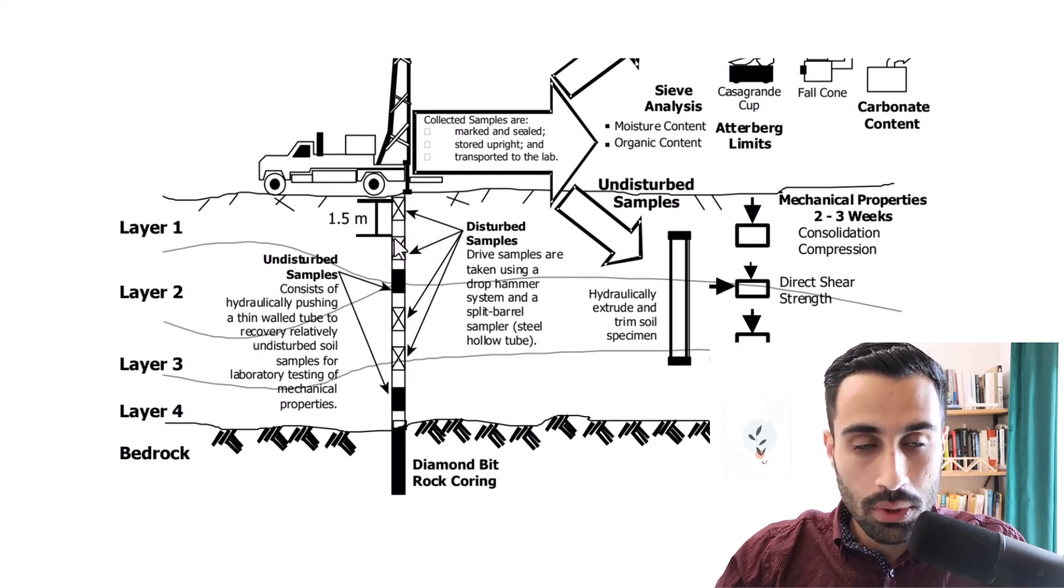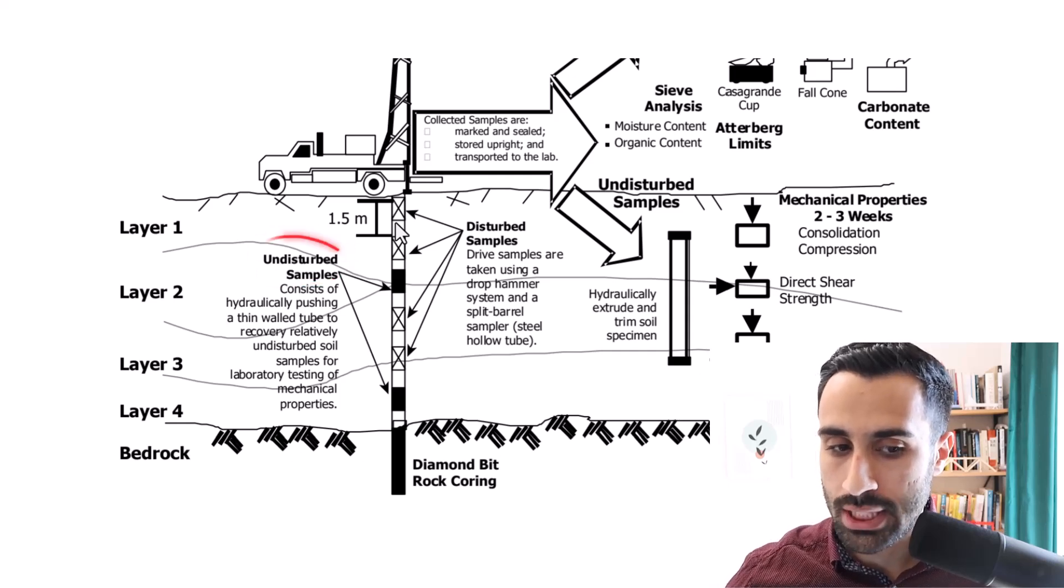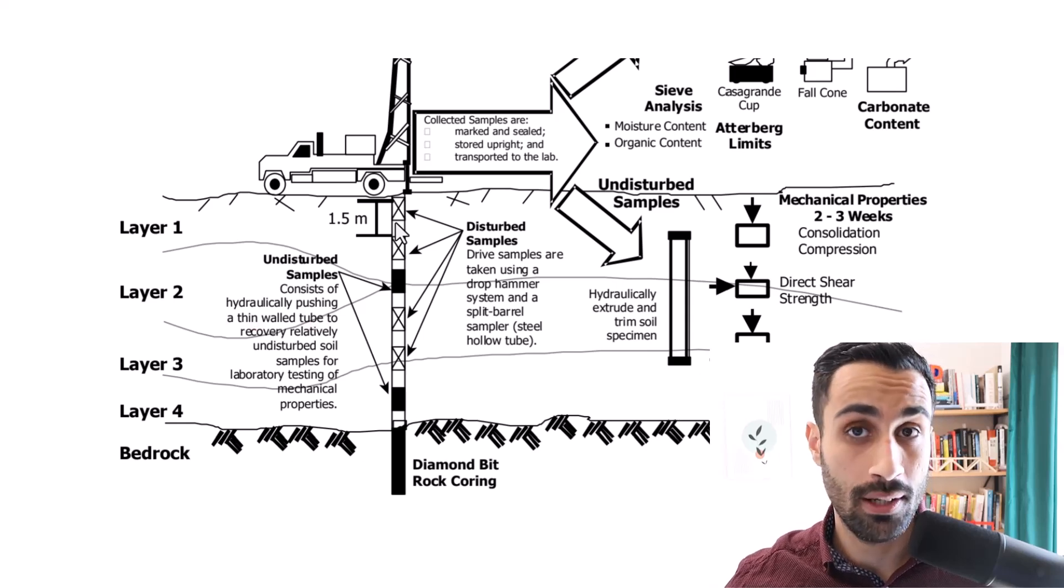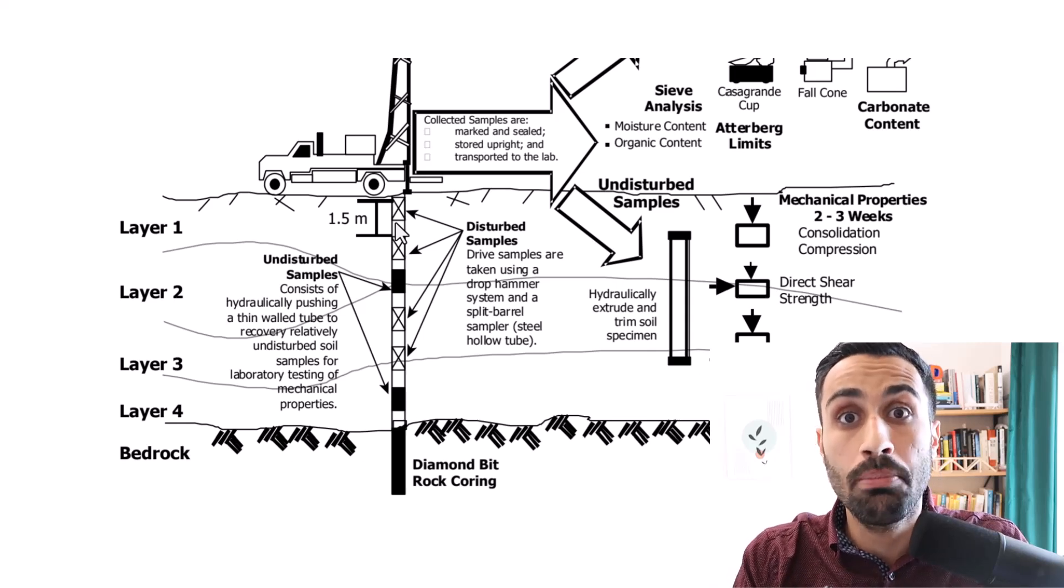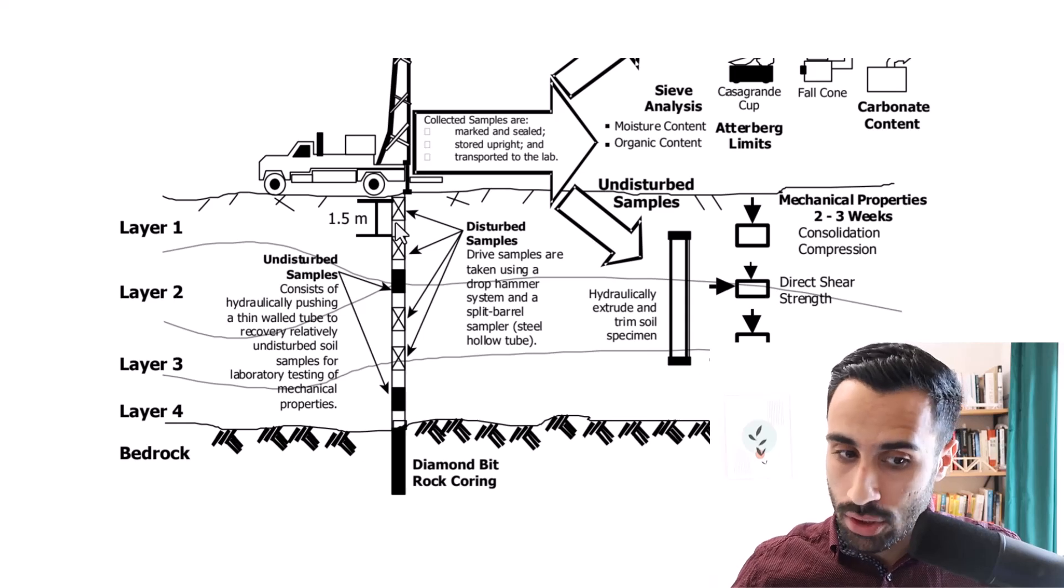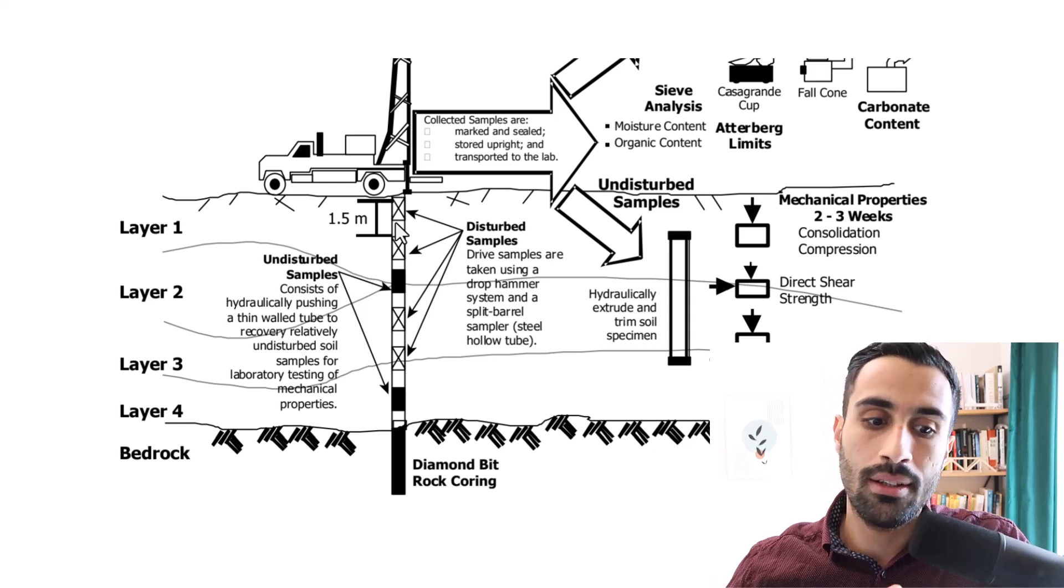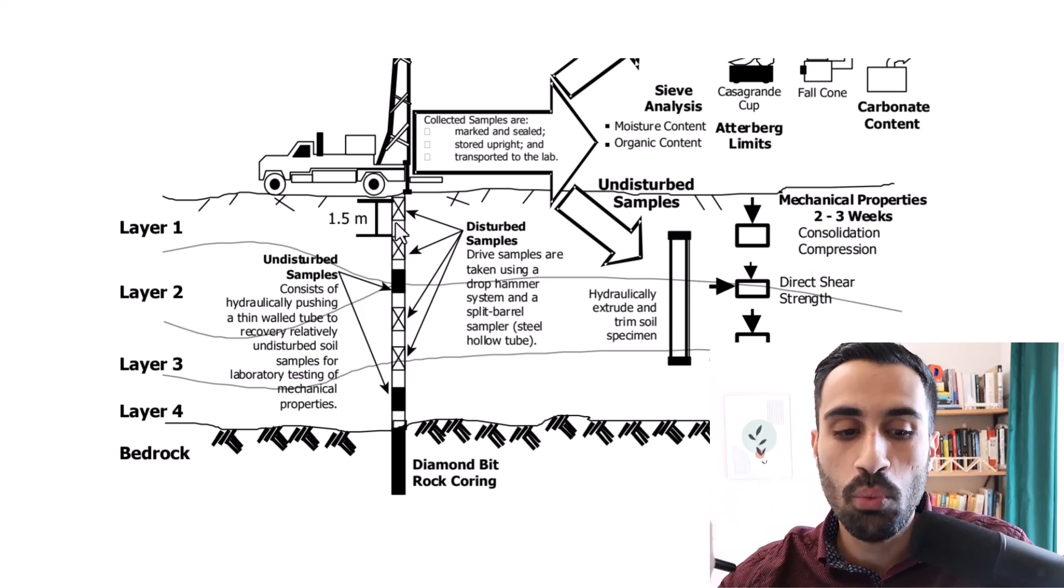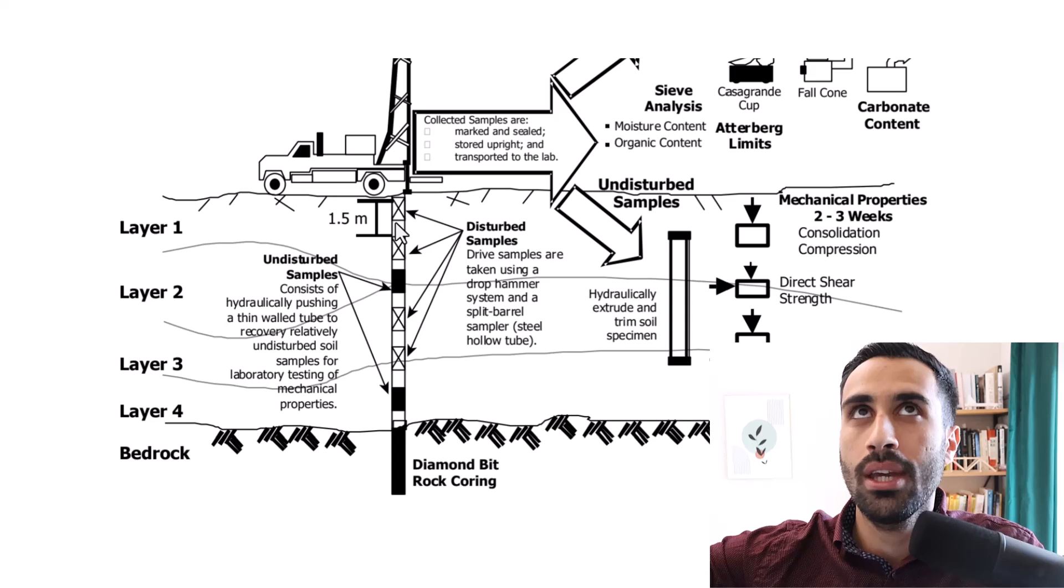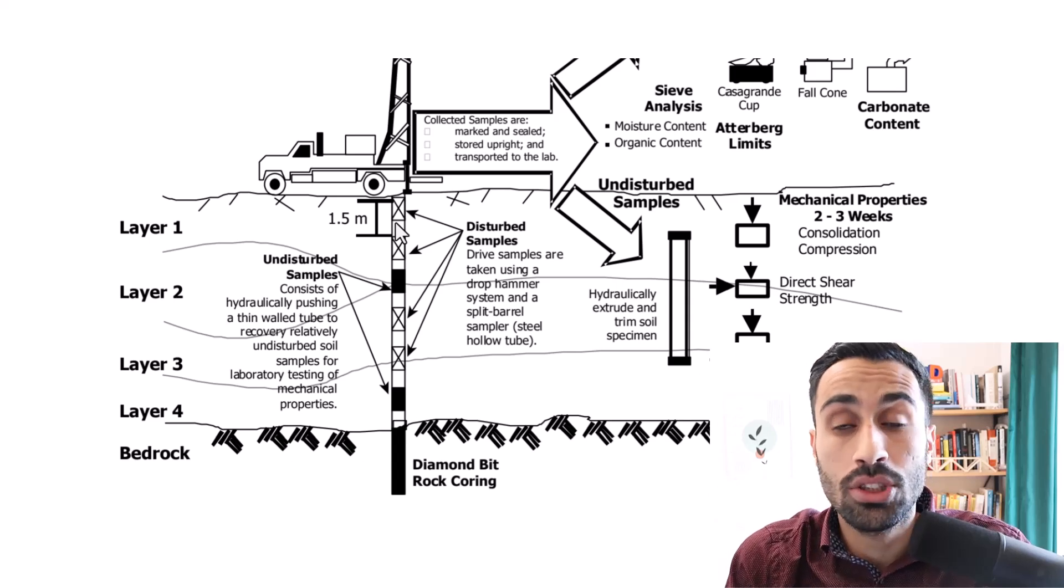So we will drill and notice something important in the figure here. We have something called undisturbed samples. These consist of hydraulically pushing a thin wall tube. So for undisturbed samples we get a thin wall tube, a thin walled Shelby tube. Keyword. And this is undisturbed. And these is going to give us a recovery relatively of an undisturbed sample for the laboratory testing of mechanical properties. Undisturbed sample, we use that to get mechanical properties: shear strength, compressive strength, and we do the consolidation test with these undisturbed samples.